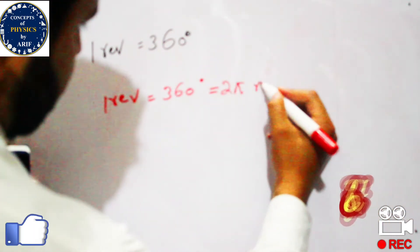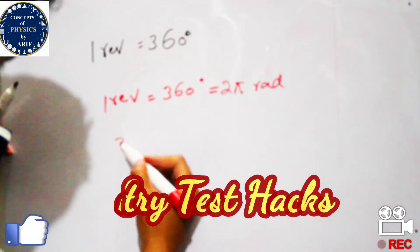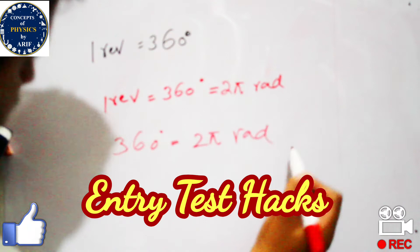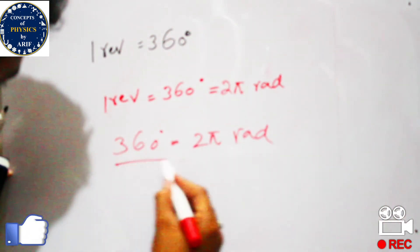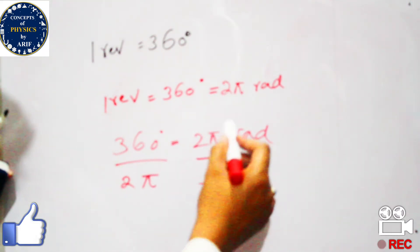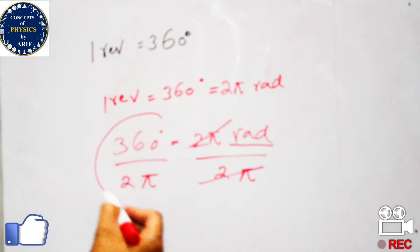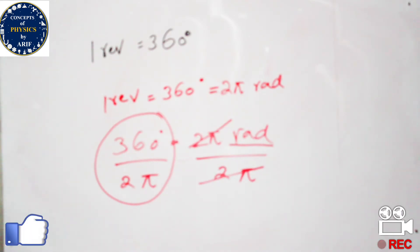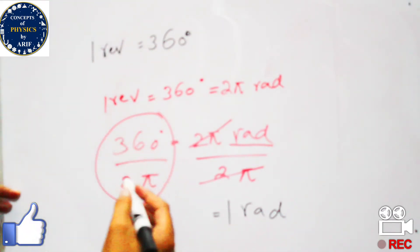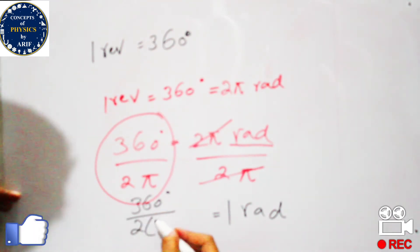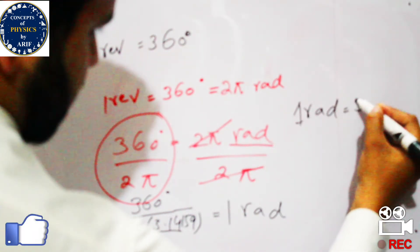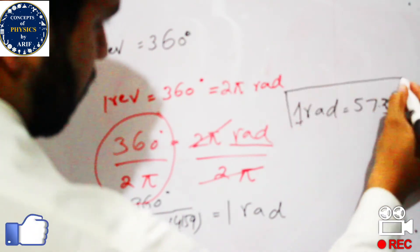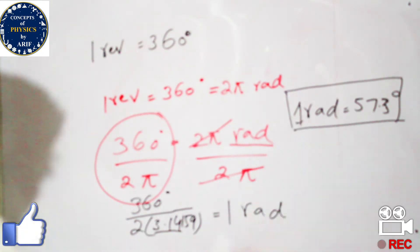From the expression 360 degrees = 2π radians, we can calculate the value of 1 radian. Dividing both sides by 2π: 1 radian = 360 degrees / 2π. The value of π is approximately 3.14159, so 1 radian equals approximately 57.3 degrees. This is a well-known value that is frequently asked in exams and entry test MCQs.